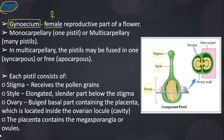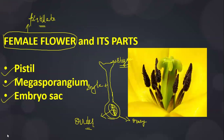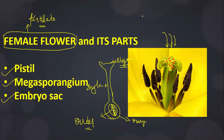The stigma acts as a landing place for the pollen grains. The pollen grains — either from the same flower or from another flower — land on the stigma, then pass through the style and finally into the ovary.